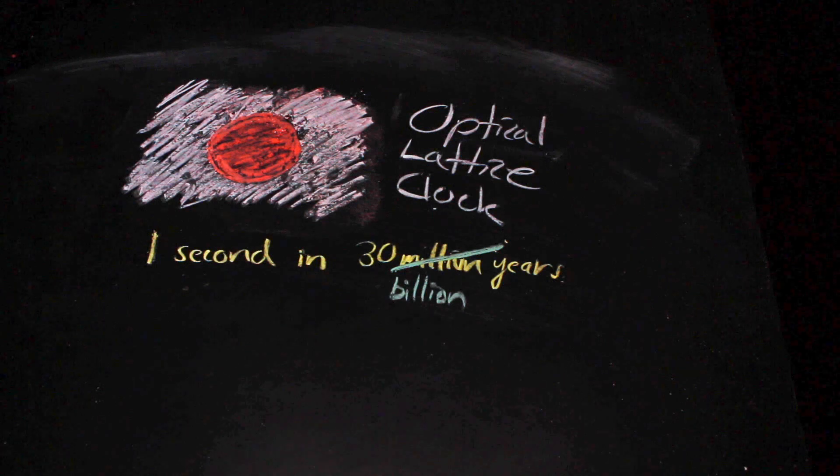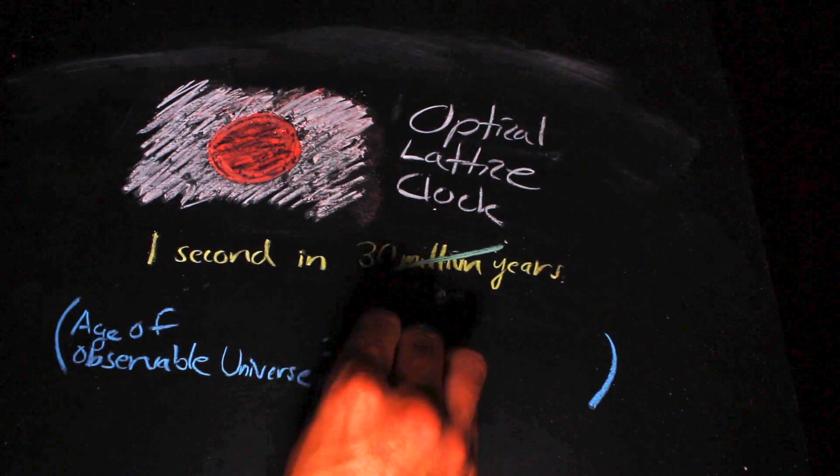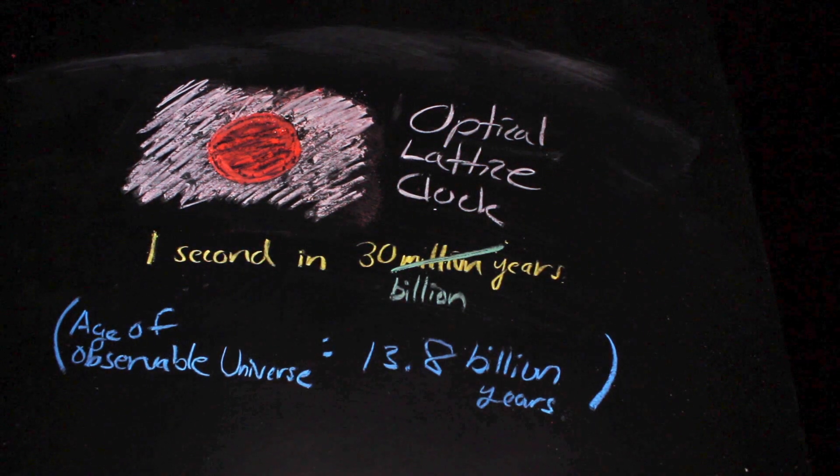That's an error of one second in a period of more than twice the estimated age of the observable universe. The definition as it stands may not be completely absolute, but it is so very precise that we can start to use it to define other types of measurement.